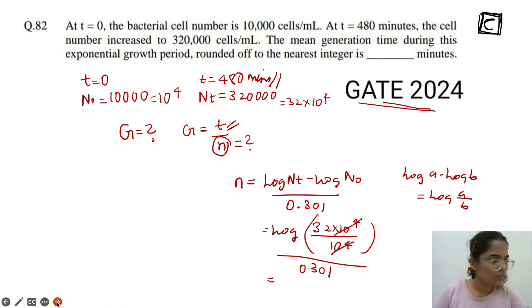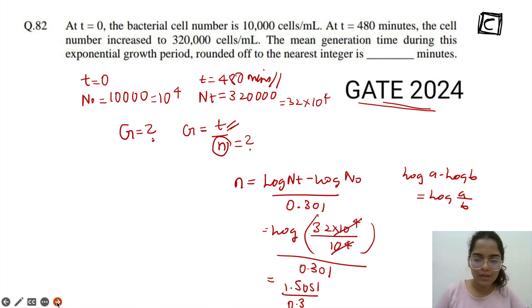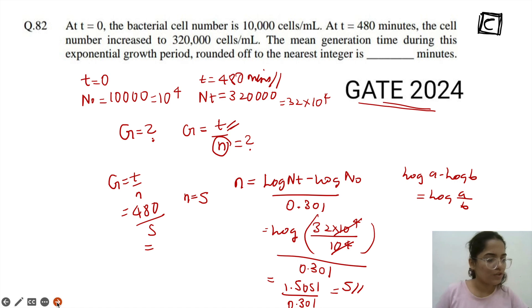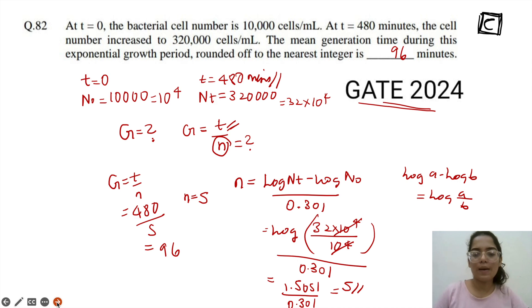Log 32 = 1.5051, divided by 0.301, which equals 5. So n = 5. Therefore g = t / n = 480 / 5 = 96. The answer is 96 minutes.